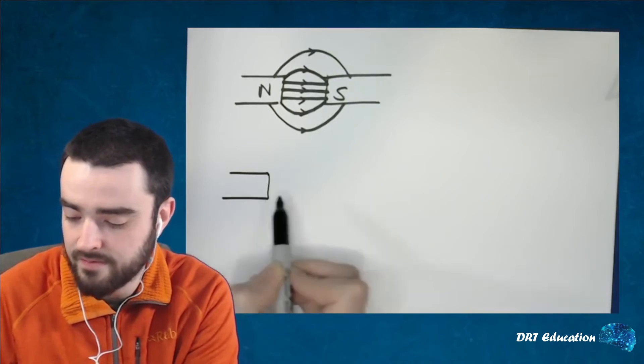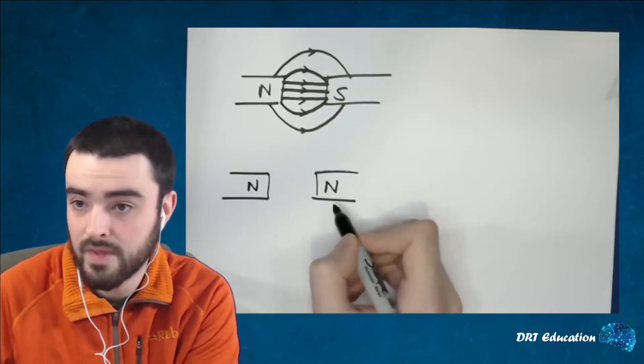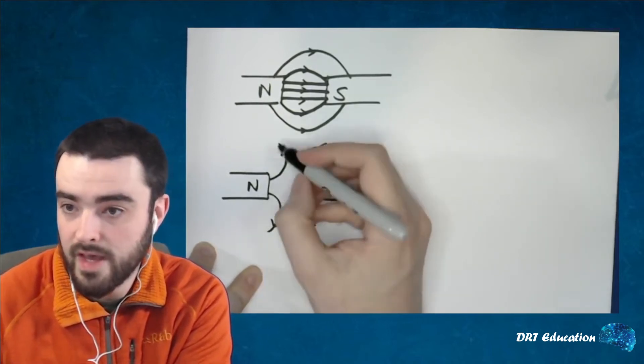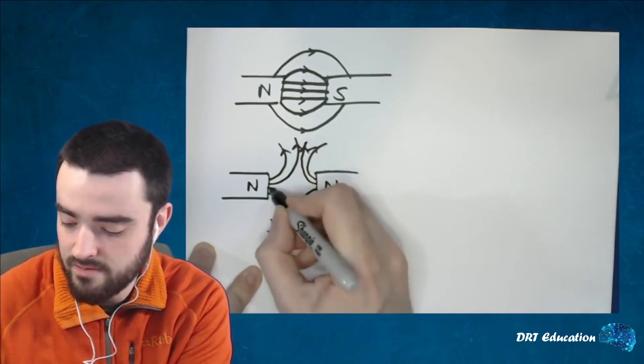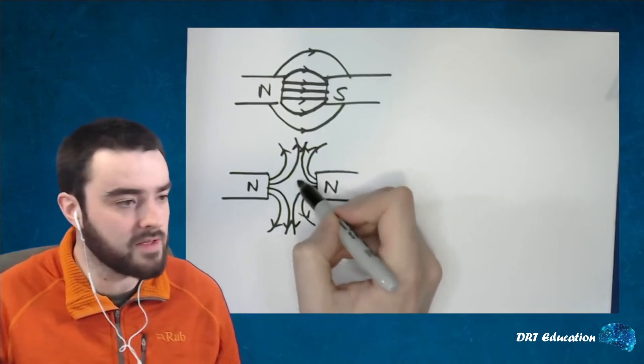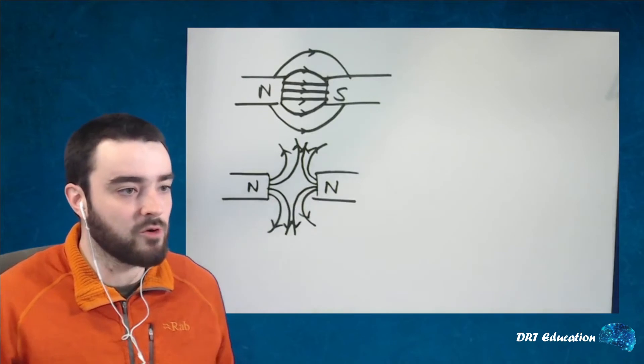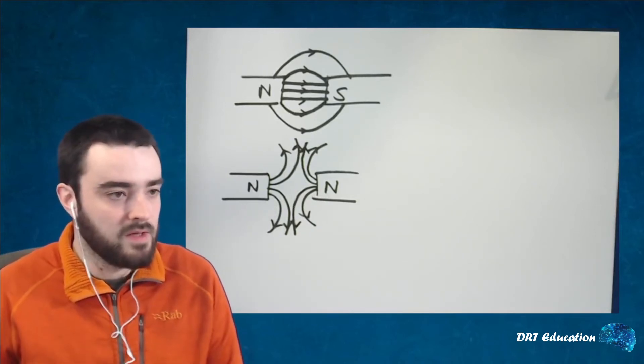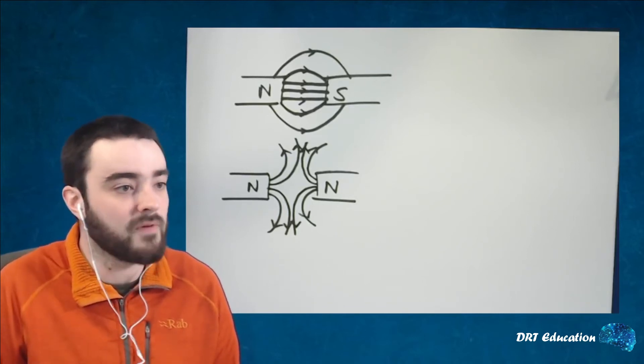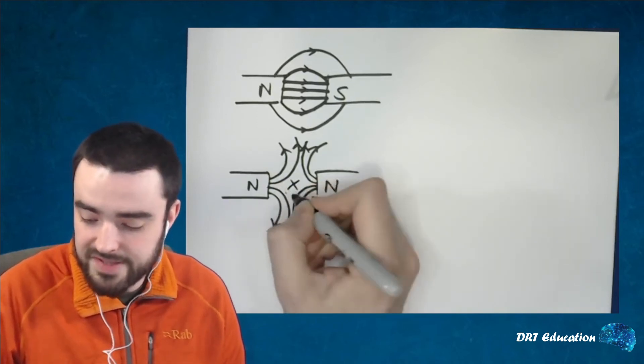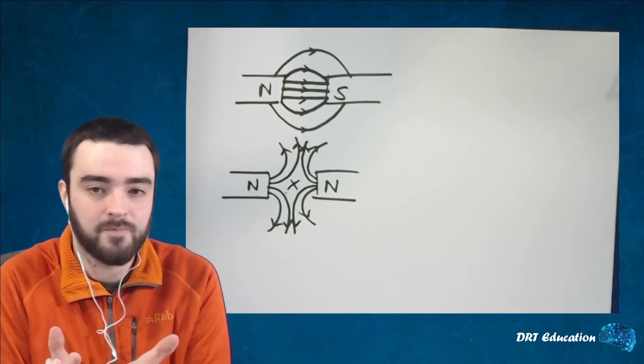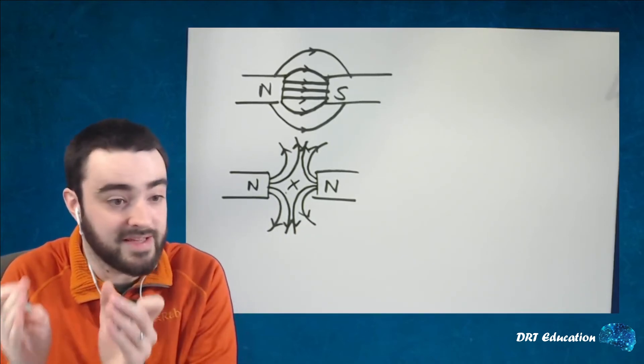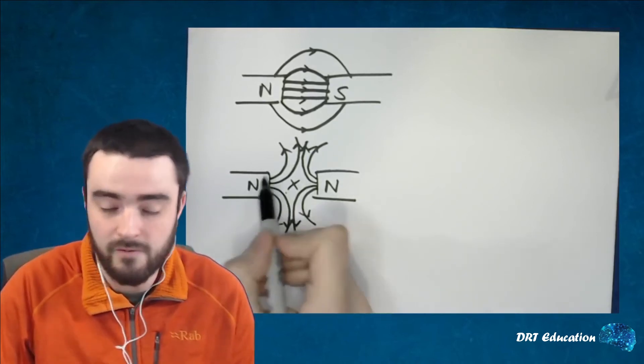If we had a repulsive field, then it might look something a bit like this. And you'll note that because it's cancelling out, at some point there will be a region where there is no field. Because if you placed something in there, say we had a tiny south pole in here, it will be equally attracted and equally repulsed to both of them. Because the field is representing the magnitude and direction of a force, there would be no field in this central section because the resultant force would be zero. It's not this mystical place where no magnetic force can touch it, it's just that it is being equally attracted and repulsed from both sides.